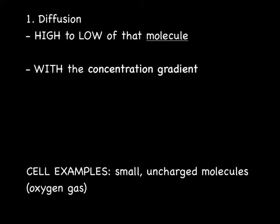Now we'll get into the examples of passive transport — there will be three. Diffusion is the first. Diffusion is a general term for movement of molecules from high to low concentration. The example of the chocolate chip cookie smell is an example of diffusion — the cookie smell moved from high concentration in the kitchen to low concentration in another room until it was evenly spread out at equilibrium. We call this moving with the concentration gradient, from high to low.